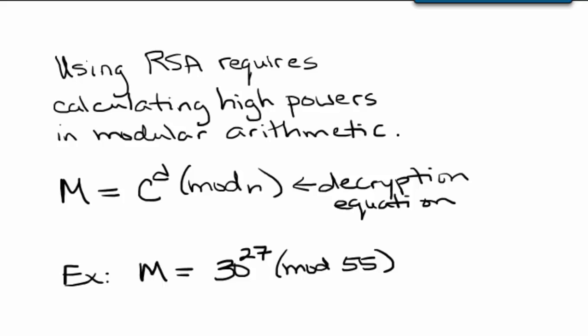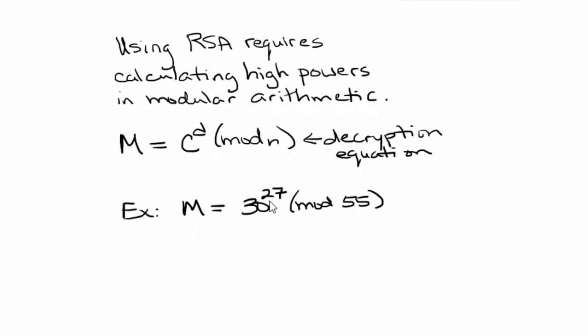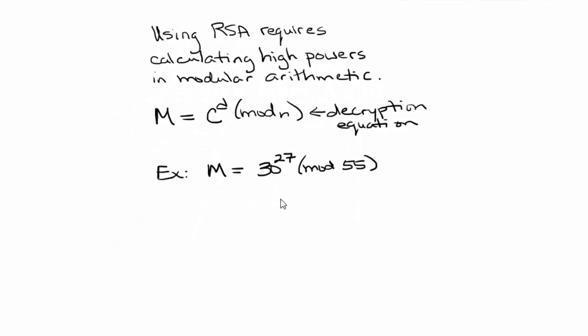For example, we might have to calculate m equals 30 to the 27th power mod 55. The problem we run into is that calculators can't handle 30 to the 27th power. That's an enormous number.